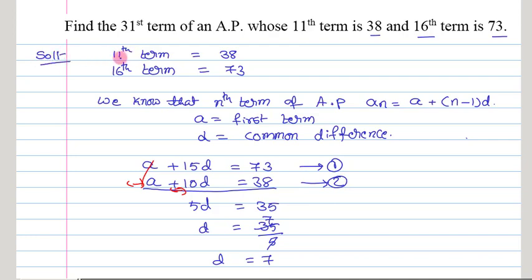What is given? We have the 11th term as 38 and 16th term as 73. We know that the nth term of an AP formula is a_n = a + (n-1)d, where a is the first term and d is the common difference.